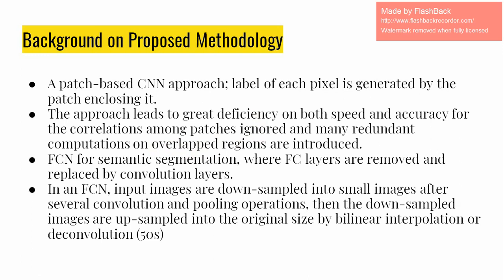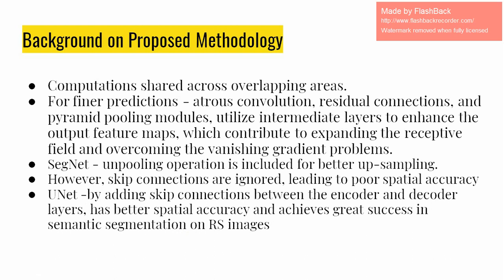Long et al. first proposed FCN for semantic segmentation, where fully-connected layers are removed and replaced by convolutional layers. In a fully convolutional neural network, input images are downsampled into small feature maps after several convolution and pooling operations, then upsampled back to the original size by bilinear interpolation or deconvolution. Since computations are shared across overlapping areas, the FCN achieves great efficiency. Some methods also utilize dilated convolution, residual connections, and pyramid pooling modules to expand the receptive field and overcome vanishing gradient problems.